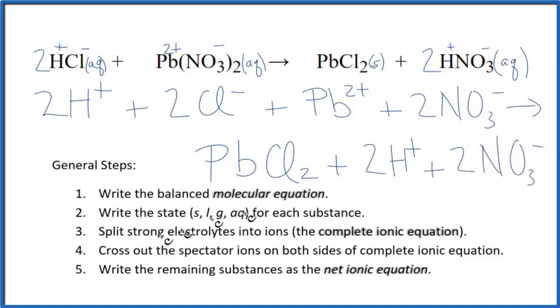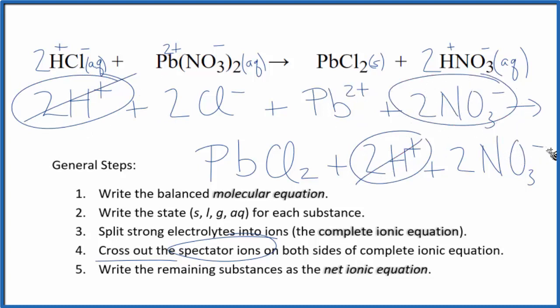Now we can cross out spectator ions. They're on both sides. I have 2 hydrogen ions here and 2 here in the products. Cross those out, and then 2 nitrate ions in the reactants and 2 in the products. Cross those out, and that leaves our net ionic equation for HCl plus Pb(NO₃)₂. I'll clean it up and write the states.